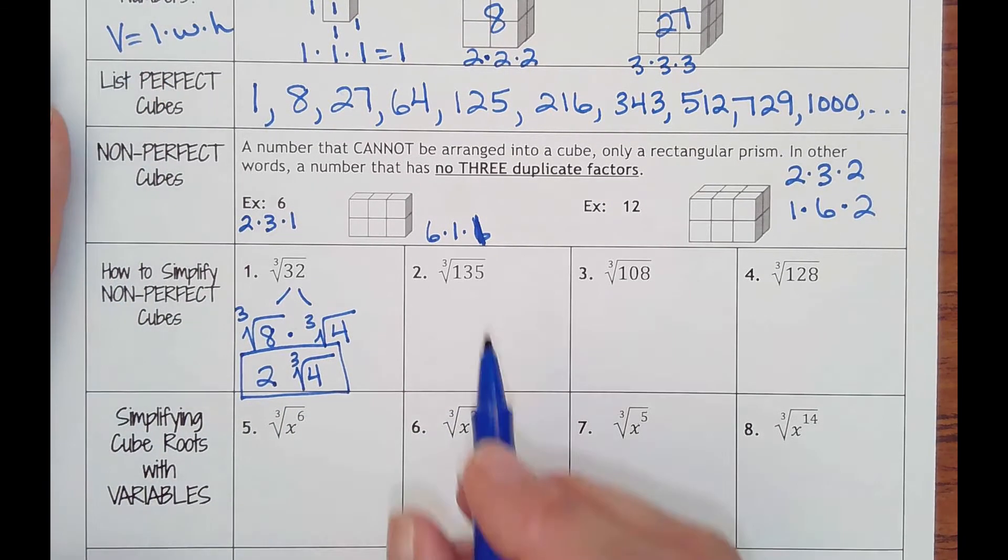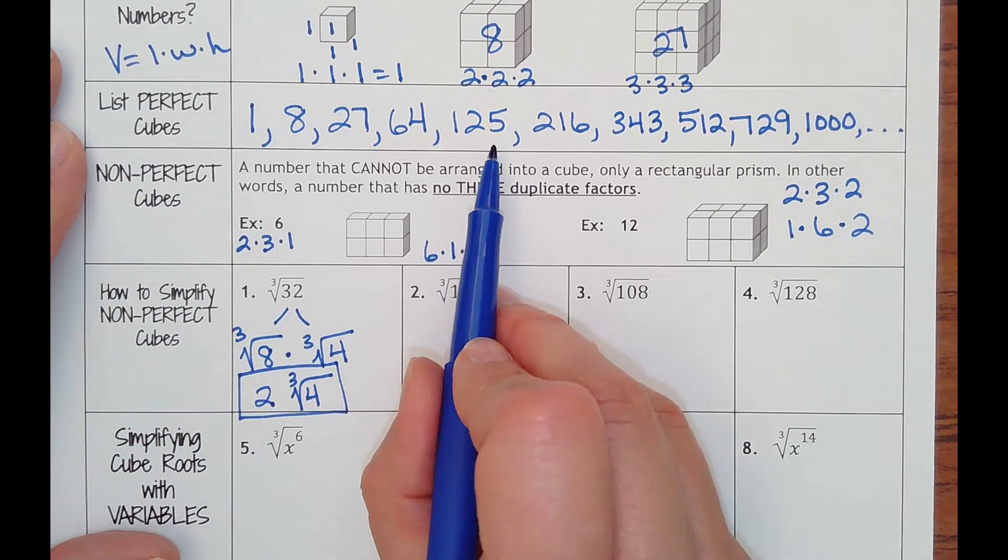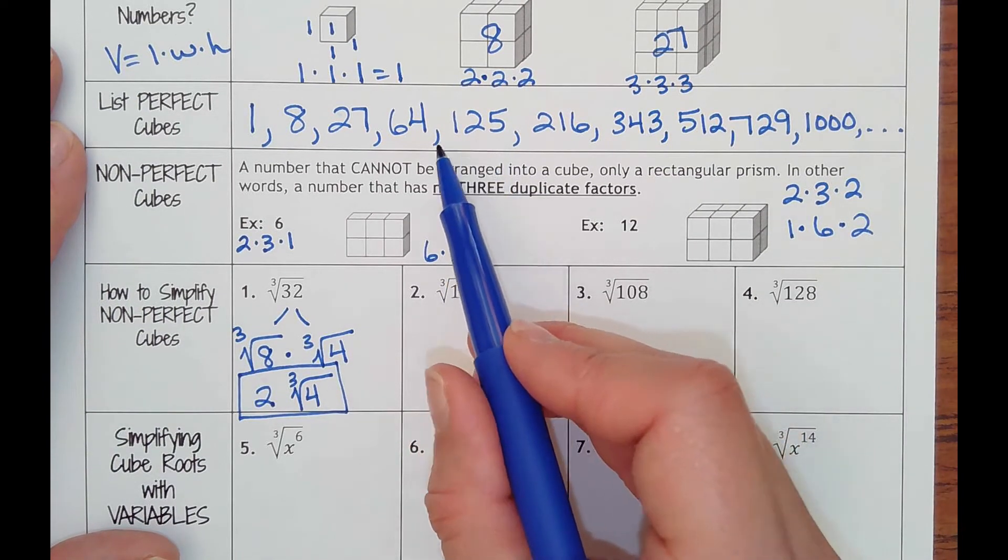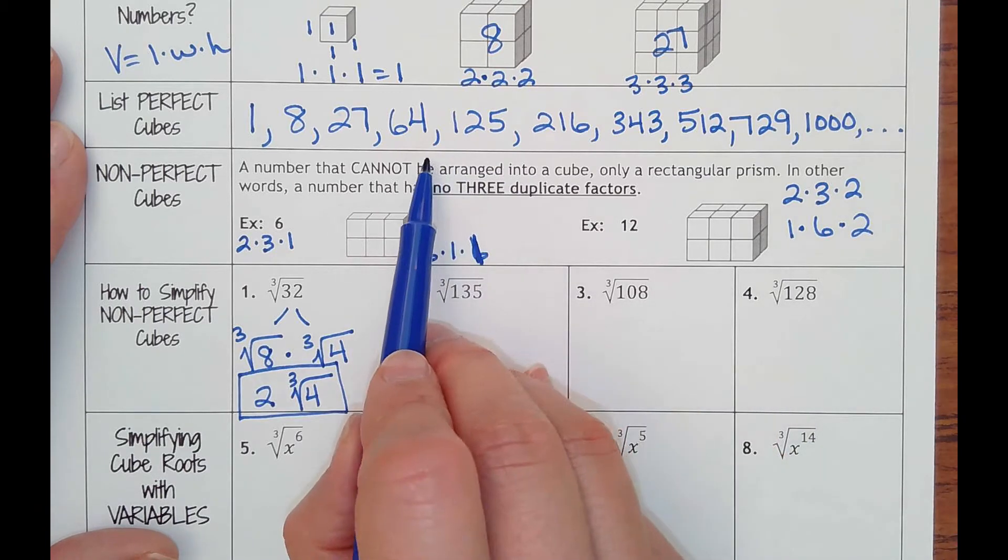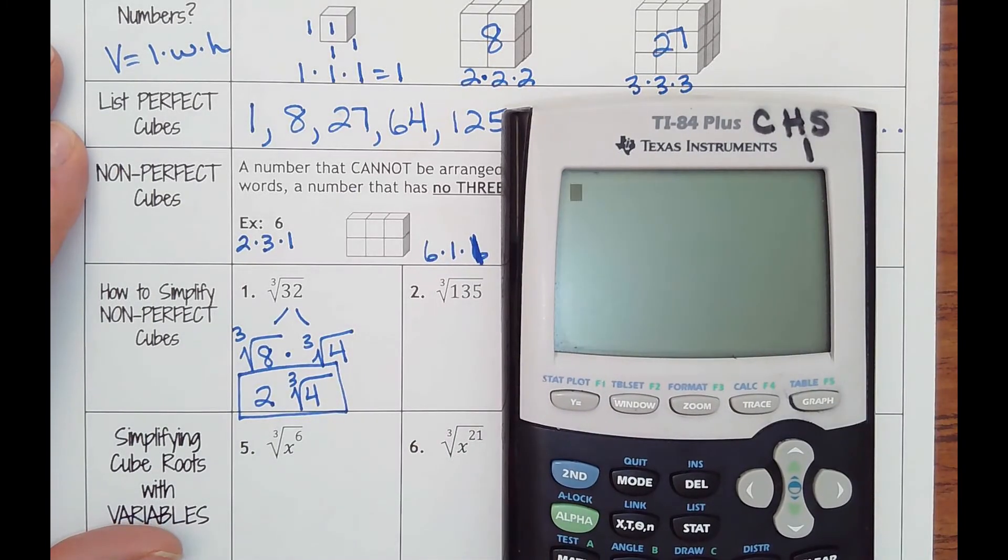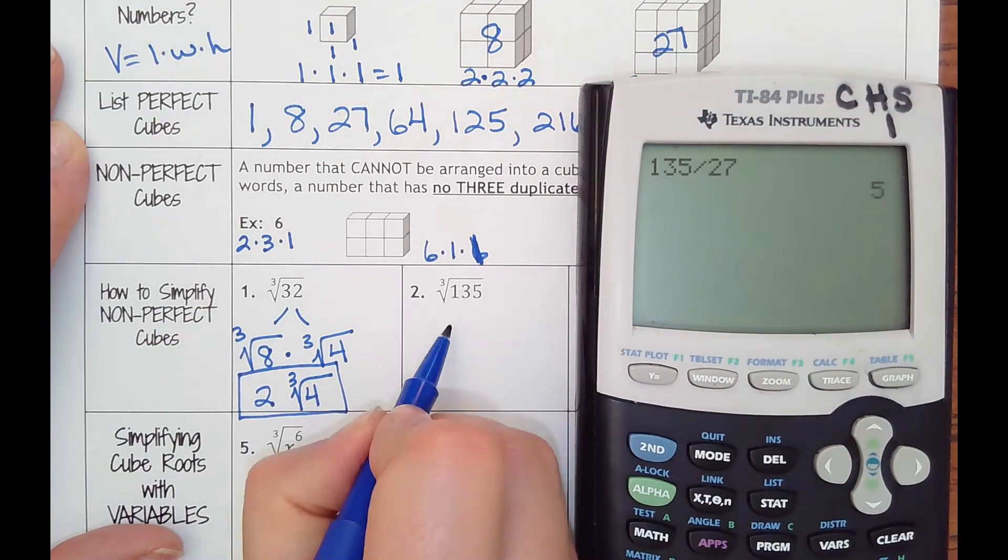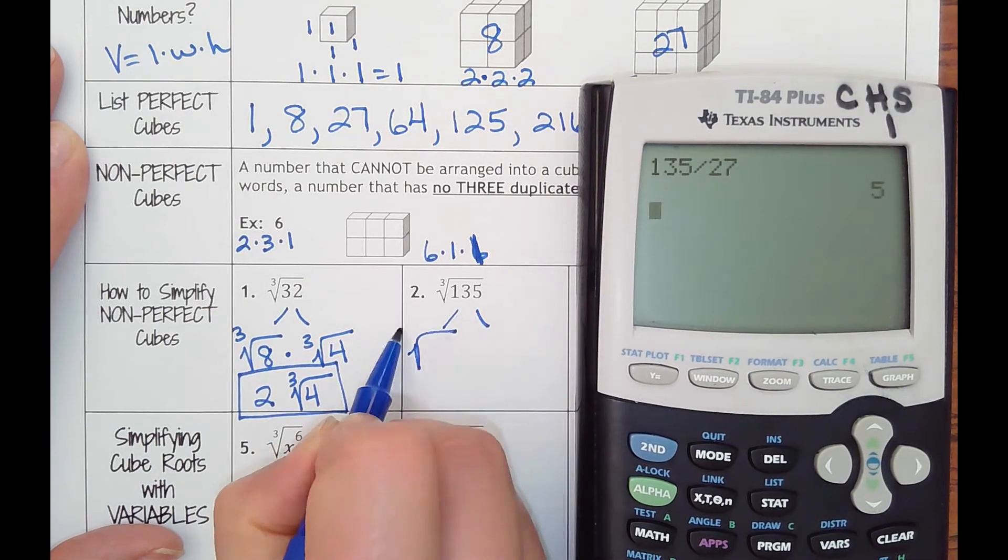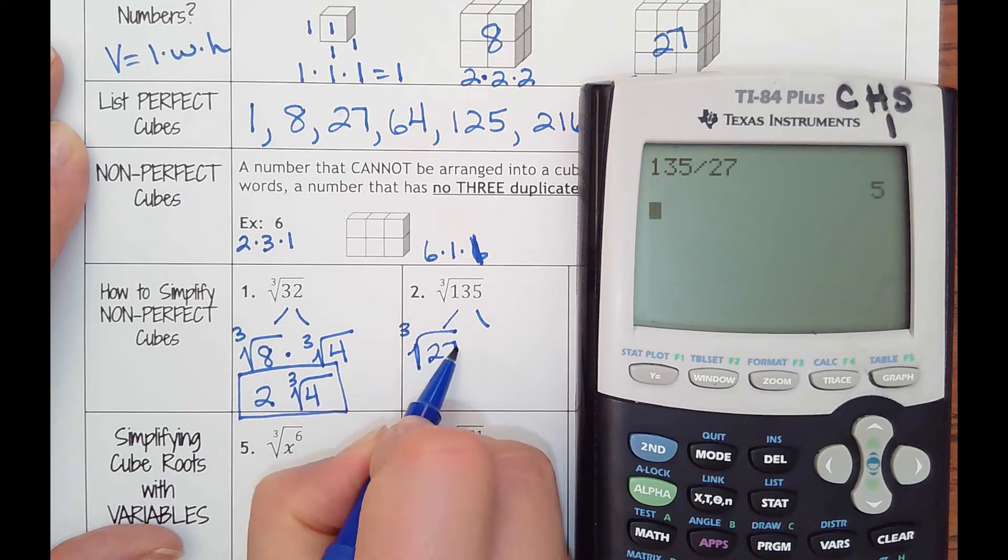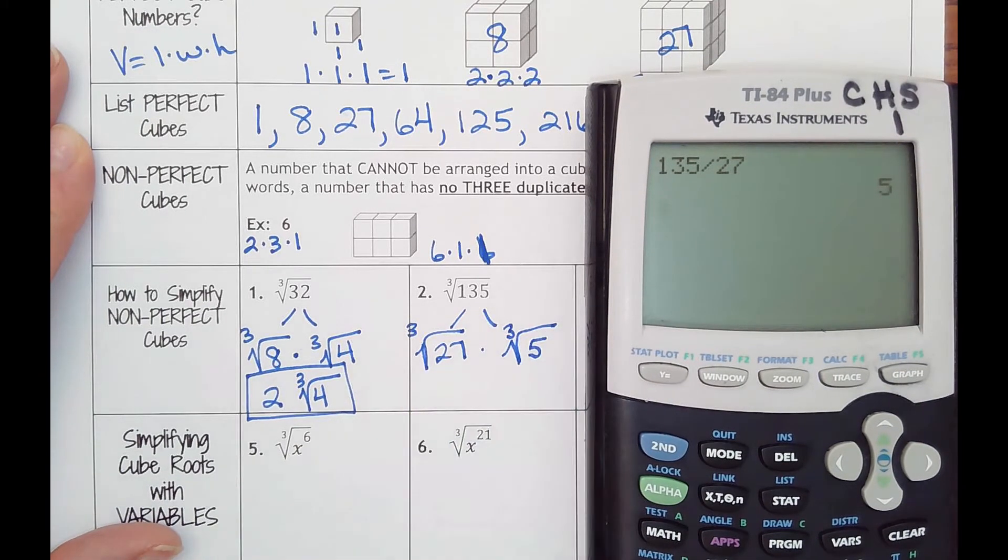Number two, cube root of 135. Start at the top of your list. 125, no. 64 double would be 128, no. 27, maybe. Yep, 27 and five.